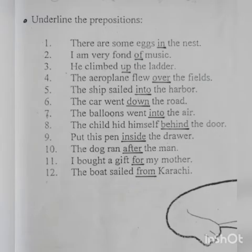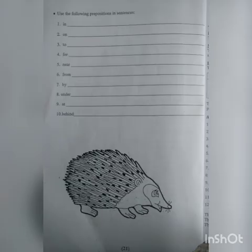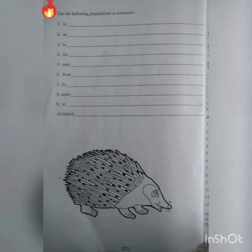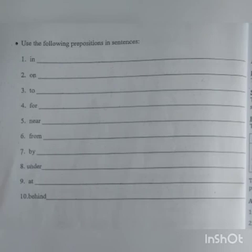Underline other sentences by yourself. Make a sketch on page number 21. Use the following prepositions in sentences. नीचे दिये गए preposition को जुमलों में इस्तेमाल करें. Sentence बनाने से पहले अपनी writing और proper noun का खास ख्याल रखें. और ये भी याद रखें कि sentence का पहला letter हमेशा capital होता है, और sentence complete करने के लिए हम last में full stop लगाते हैं.